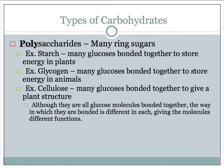The last type of carbohydrate is a polysaccharide — poly means many, so a polysaccharide is many rings of sugars. Starch is many glucoses bonded together to store energy in plants. Glycogen is many glucoses bonded together to store energy in animals. Cellulose is many glucoses bonded together to give plants their structure. Although they are all glucose molecules bonded together, the way in which they are bonded is different in each one, and that gives them different functions.